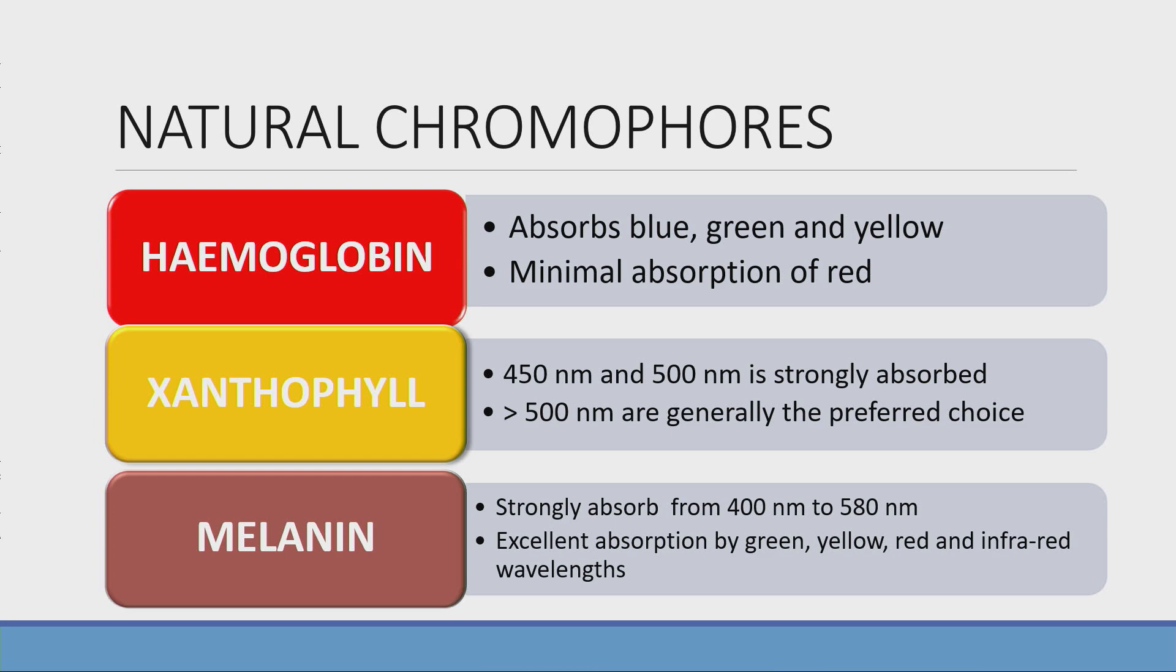Melanin, which is present in iris and also in deep retinal tissue, absorbs from 400 to 580. It has excellent absorption by yellow, green, red.